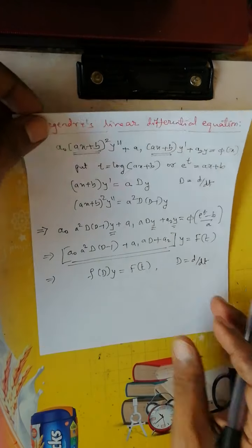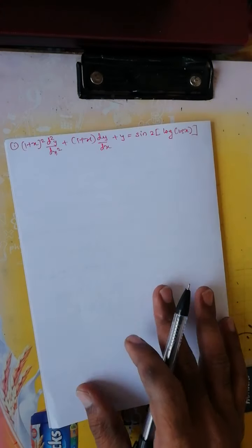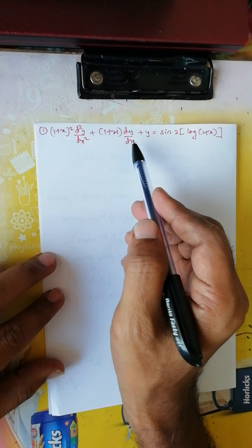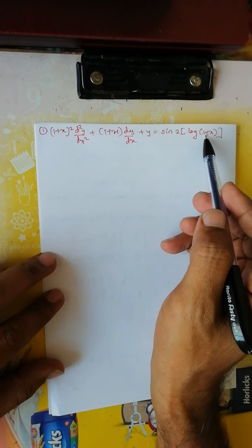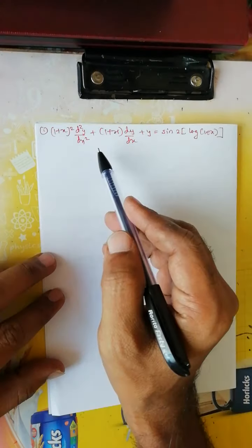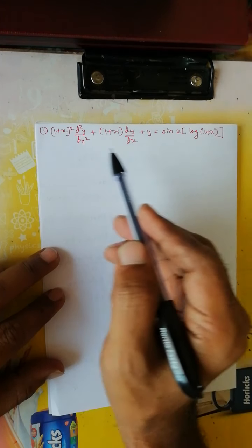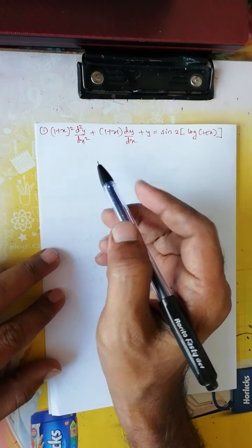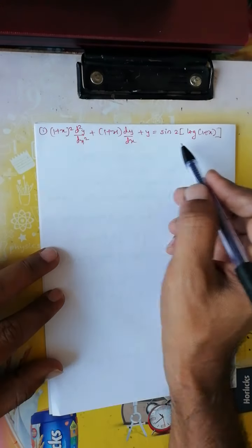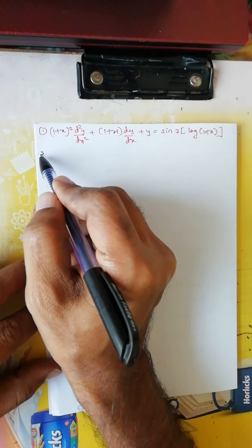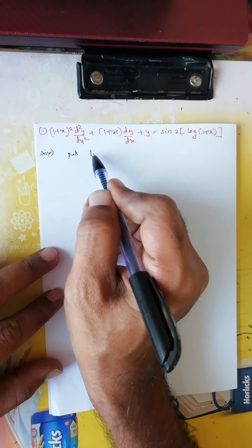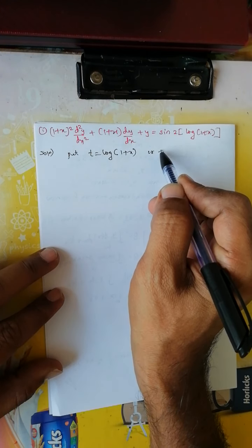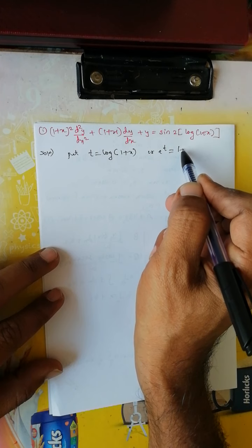Now we see one example: (1 + x)²·d²y/dx² + (1 + x)·dy/dx + y equals sin(2·log(1 + x)). Obviously this is Legendre's differential equation of second order, and we can observe here that (ax + b) is present in each term, with A equal to 1. Therefore we can convert this into a linear differential equation with constant coefficients. Put t equals log(1 + x), or equivalently e^t equals 1 + x.